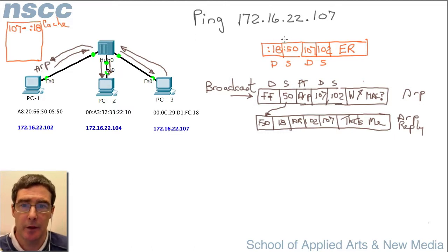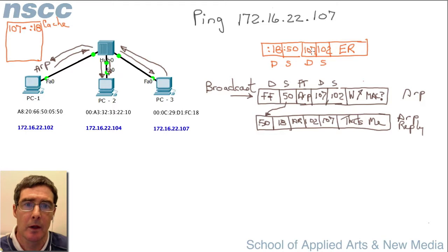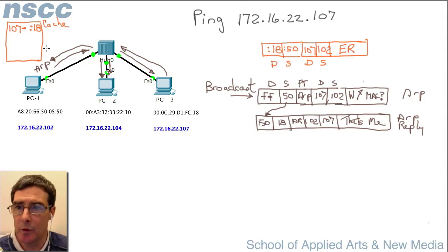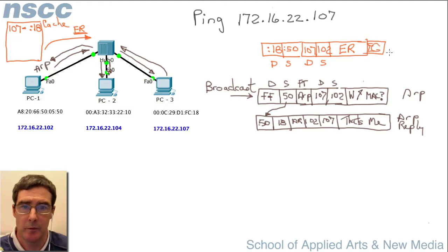In fact, the very first thing that happens when doing a ping is that it first looks in its ARP cache. However, we assumed the ARP cache was empty in this example. Now that it has constructed the frame — the orange frame — that frame goes out on the network. This is the ping or echo request frame with the packet information inside, plus a little error checking at the end.